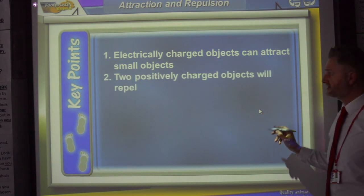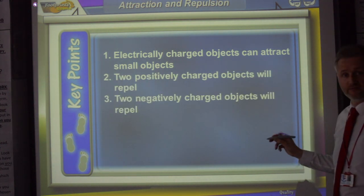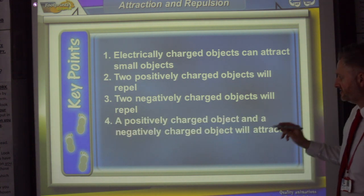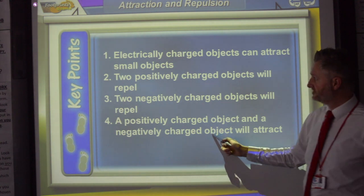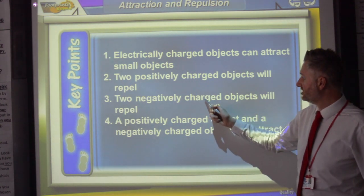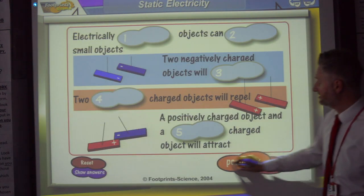Now electrically charged objects can attract small objects. Two positively charged objects will repel. Two negatively charged objects will also repel. A positively charged object and a negatively charged object will attract. So that's opposites attract, and like charges repel.